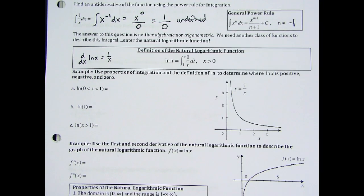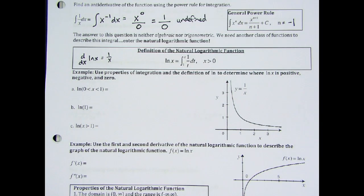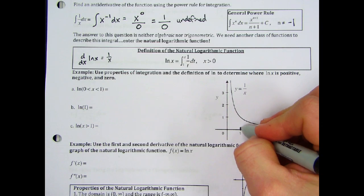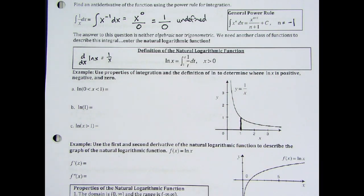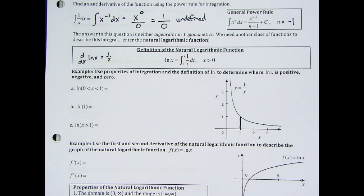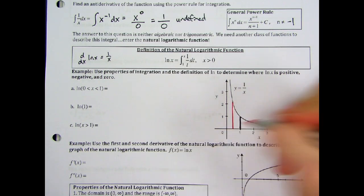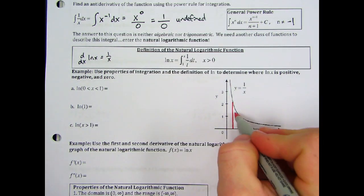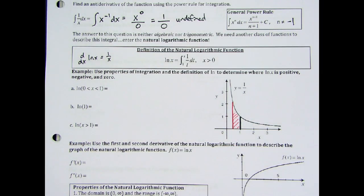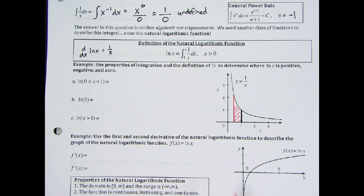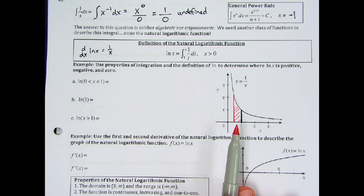Here is the 1 over x function. If we look at the natural log function with its definition as the integral, remember the integral finds the area under the curve. So if we go from 1 to something between 0 and 1, whatever that area is ends up being the natural log. The area under the curve of 1 over x is the natural log.